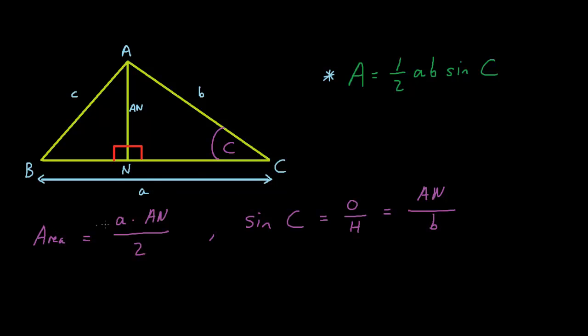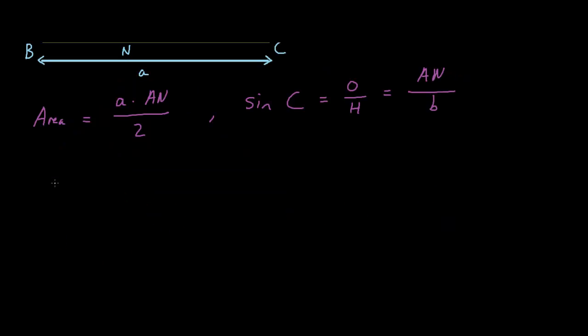Now, as we know what the area of the triangle is, and we know what sine C is, let's find out what AN is in terms of sine C. And then, once we've found the value of sine C, let's plug it in to this area equation right over here.